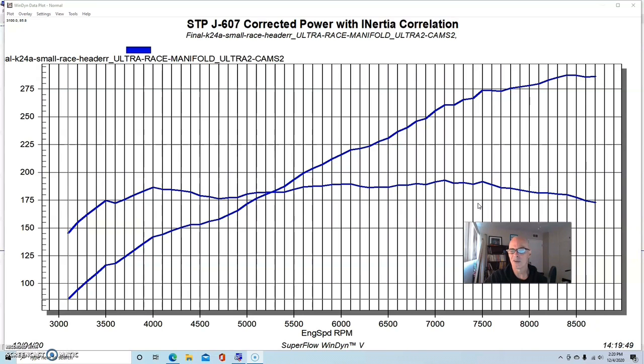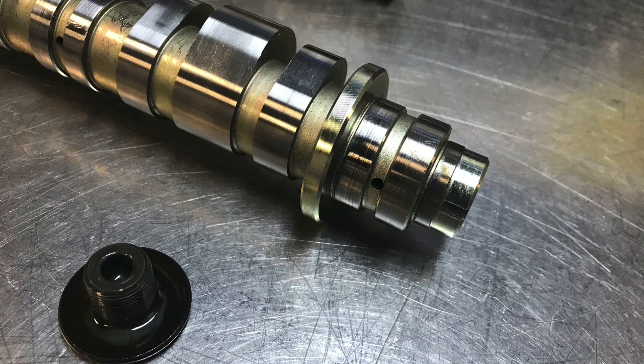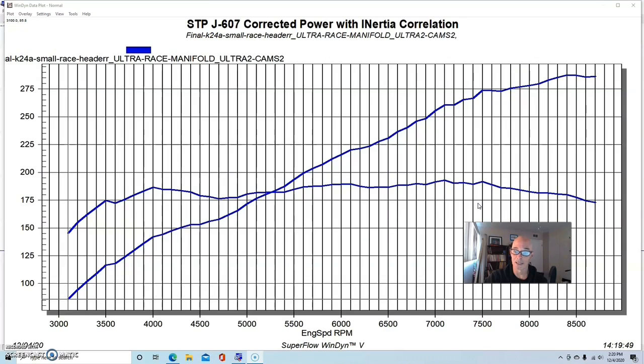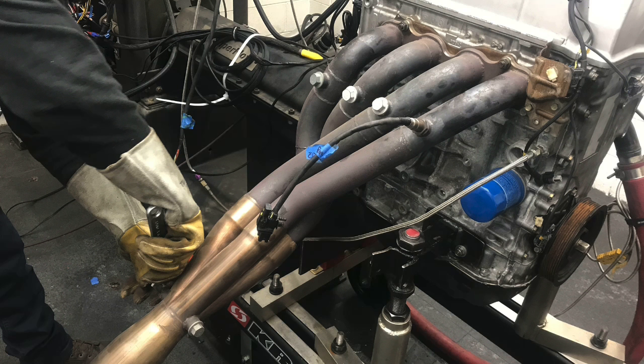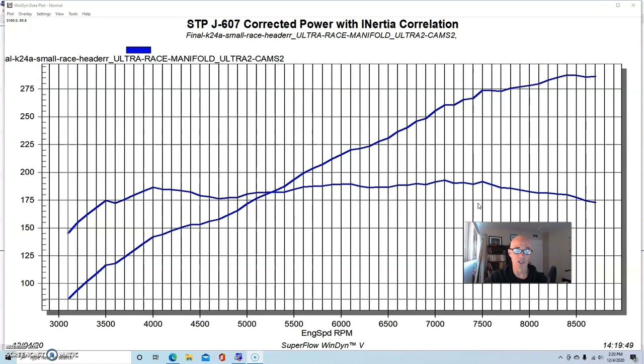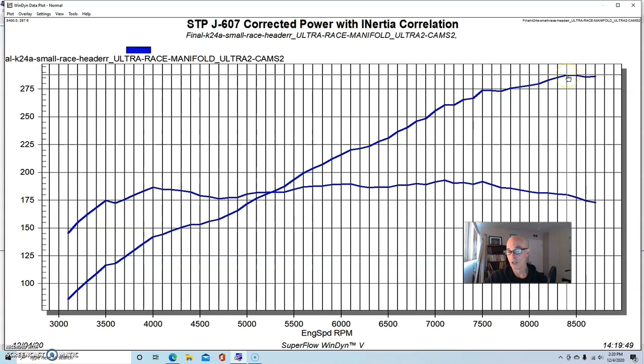We just ran it the way it came from the local supplier. We did change three things though: we put some Skunk2 stage 2 cams in it, a Skunk2 intake manifold, and when we ran it naturally aspirated we also ran it with one of their long tube headers.